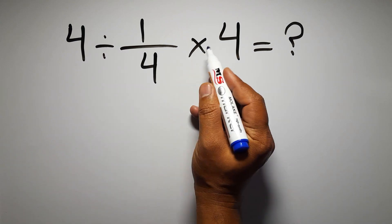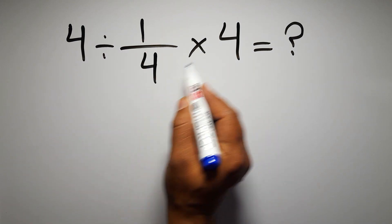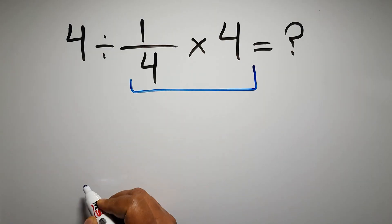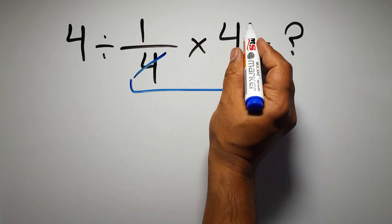First I do this multiplication: 1 over 4 times 4. We can easily cancel this 4 and this 4, so we have just one.